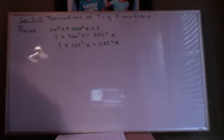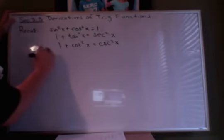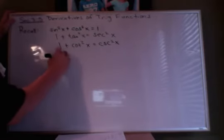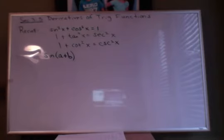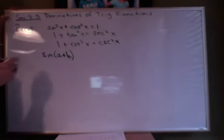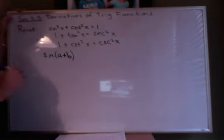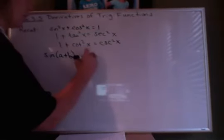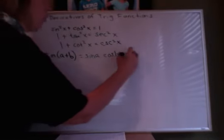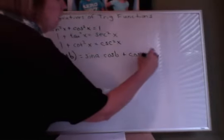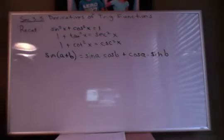There is another trig identity that we're going to be actually using here pretty quickly to talk about the derivative, and that is a sum formula for sine. So the sine of A plus B — A and B in this case are angles. If we have the sine of A plus B, we know that that's the sine of A times the cosine of B plus the cosine of A times the sine of B. And that's going to be very, very important to us.